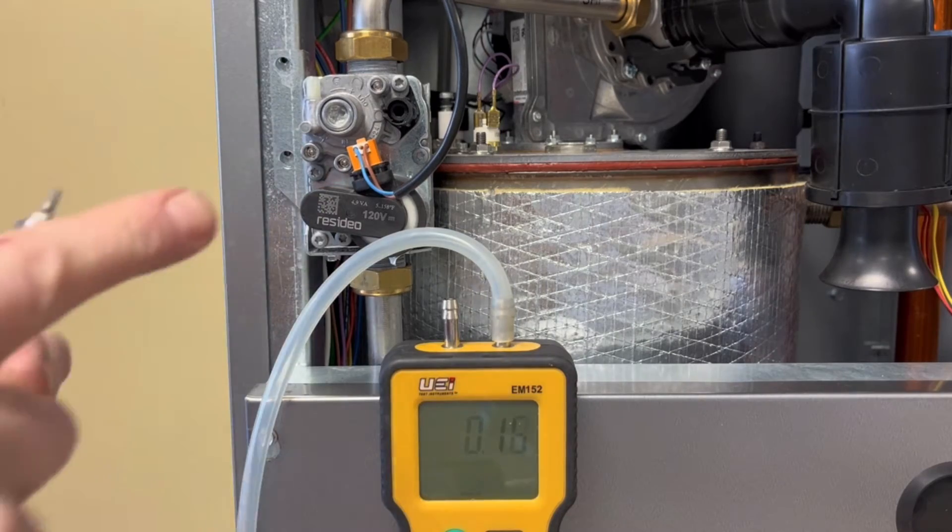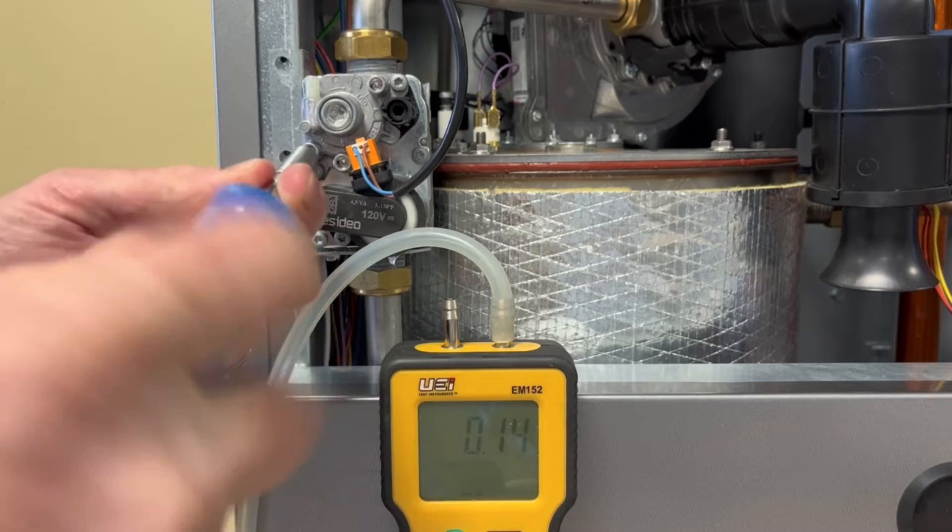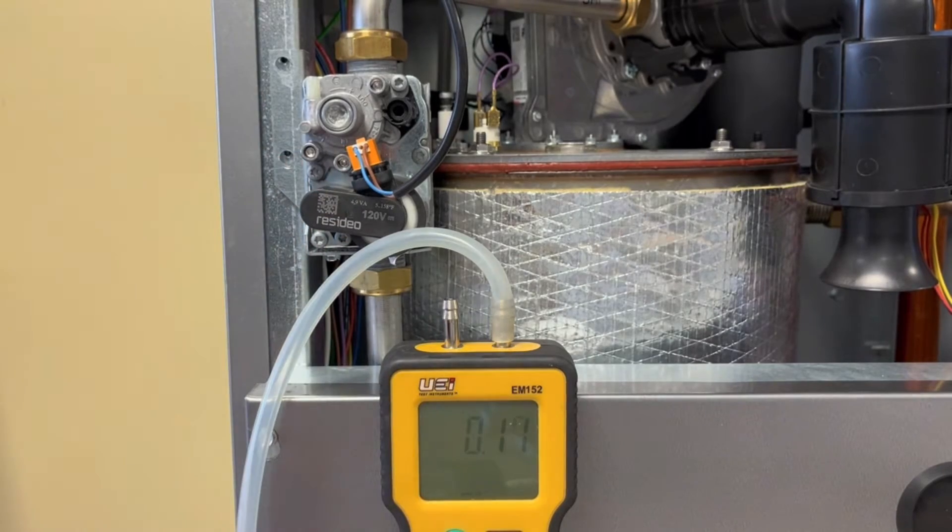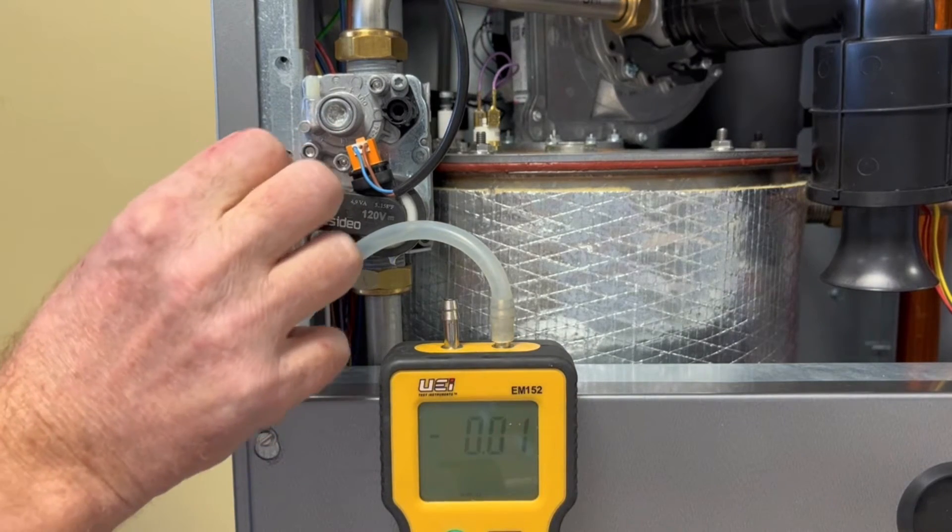To begin the gas valve reset procedure, connect your manometer to the R port on the left side of the valve. Do not remove the screw, just back it off approximately two turns and connect your manometer.